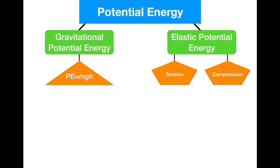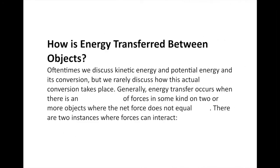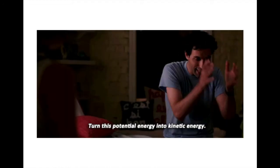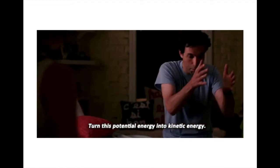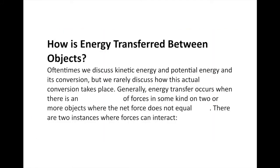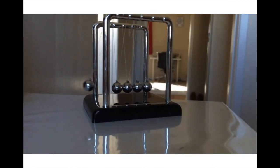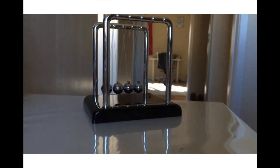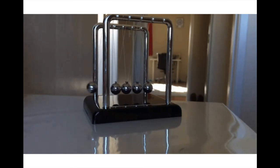We have one more section — a question you've always wondered: how exactly does potential energy turn into kinetic energy? Oftentimes we discuss kinetic and potential energy and its conversion, but we rarely discuss exactly how this conversion takes place. Generally, energy transfer occurs when there's an interaction of forces on two or more objects where the net force does not equal zero. We can see this in a Newton's cradle in slow motion — we see contact and then no contact as the object moves and changes directions, all of which require energy.